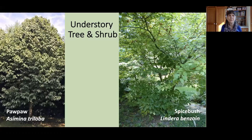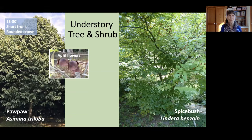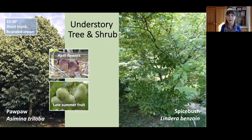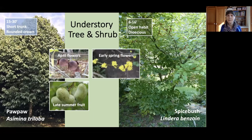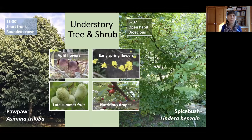An understory tree in this forest is the Pawpaw, a 15 to 30 foot tree with a short trunk and a rounded crown. It has very attractive brownish-purple flowers in April, and when pollinated, these will form late-summer fruits that are very popular with wildlife. A shrub in this forest is Spicebush. It has a very open habit and is a dioecious plant — meaning there are separate plants for the male and female flowers. These early spring flowers are showing on Spicebush in my garden right now, and in the fall, these will offer nutritious fruits referred to as drupes, very high in lipids, providing great nourishment for migrating birds.